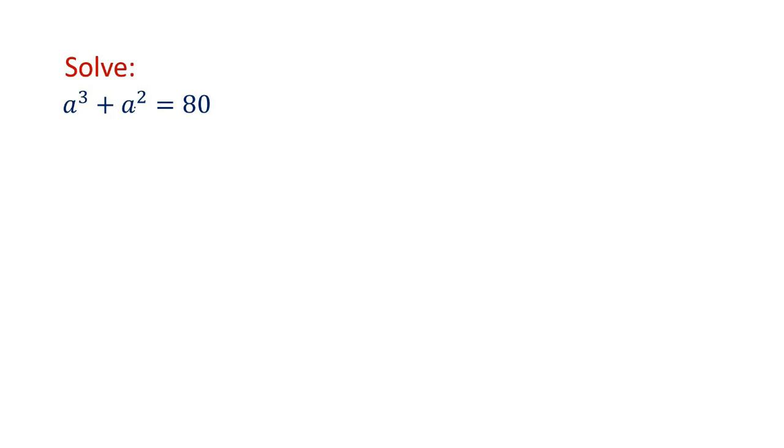So we proceed in that line and check. a³ + a² = 80, let us say this is equation 1, the given equation. So 80 should be expressed in the form of something raised to power 3 plus the same thing raised to power 2.